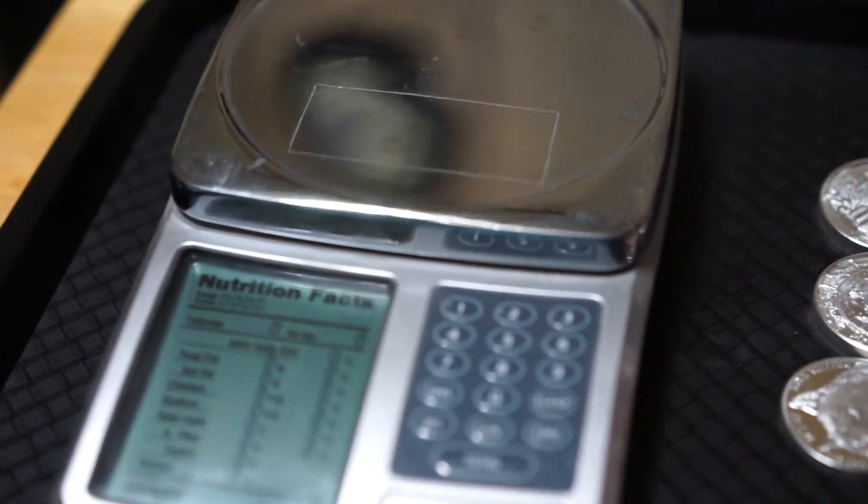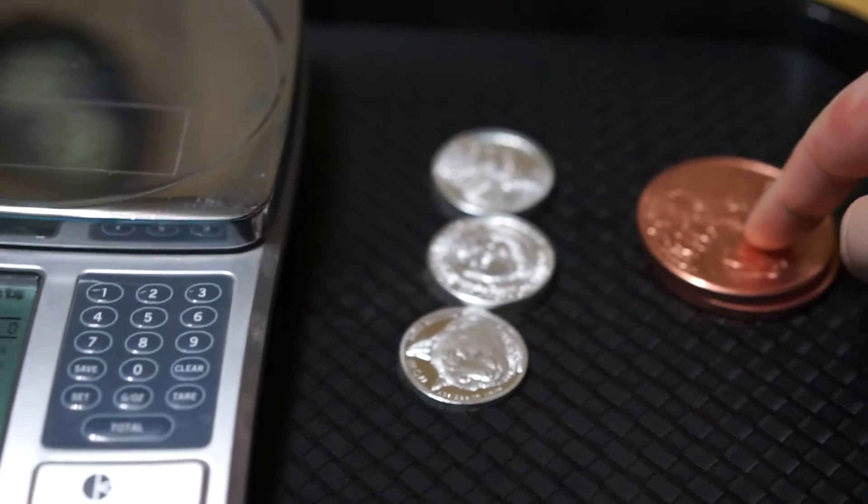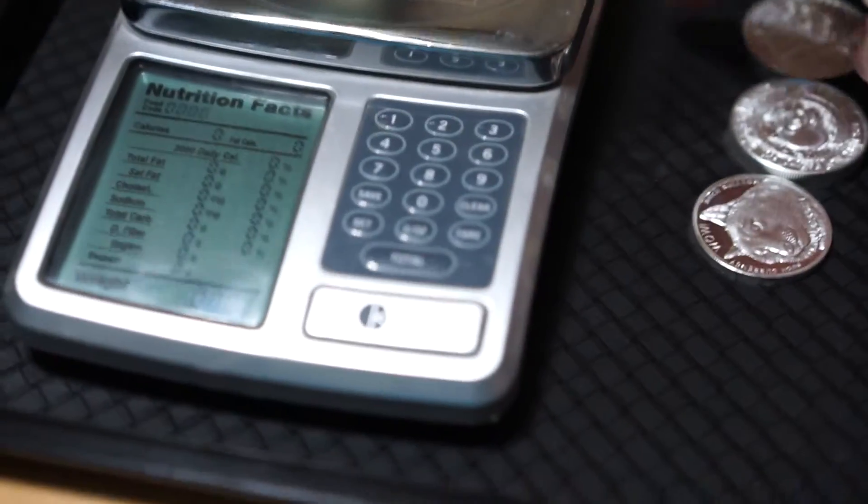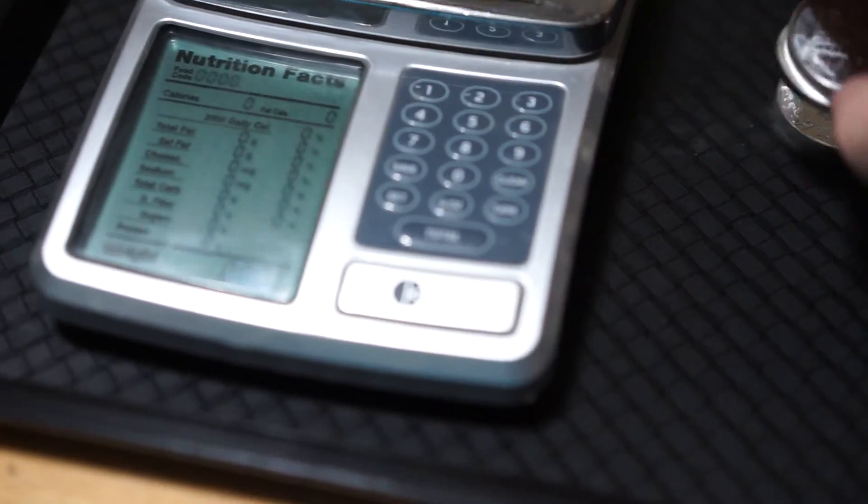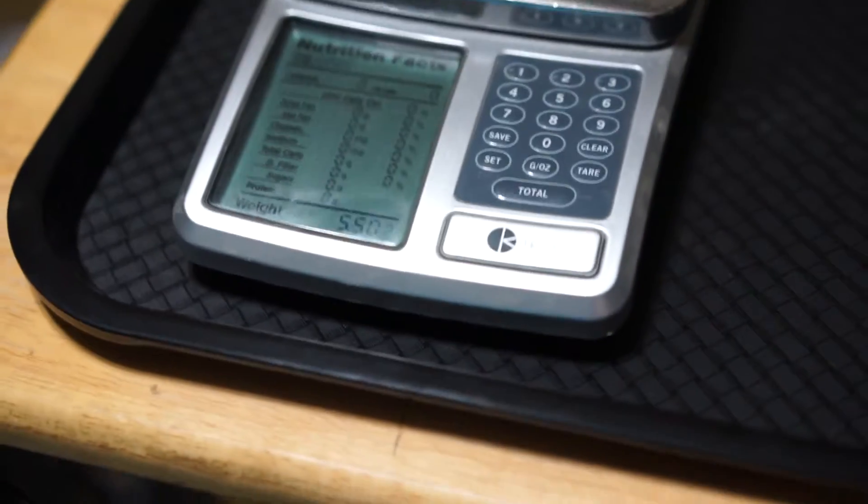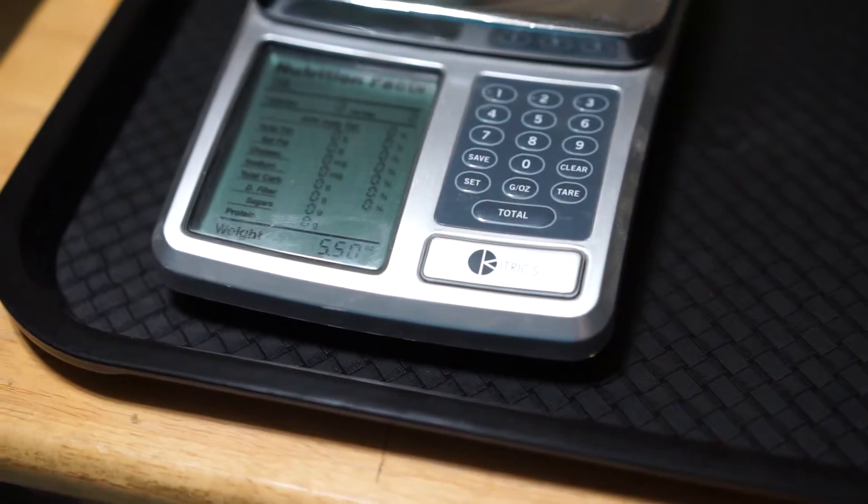Anyway, so five ounces is five ounces according to the scales. We'll take two and one... So we have five ounces of silver here, and focus, there we go. What do we have? Five and a half ounces.